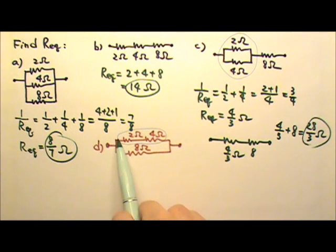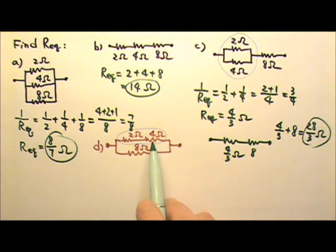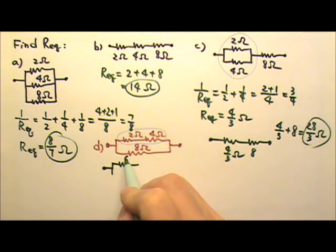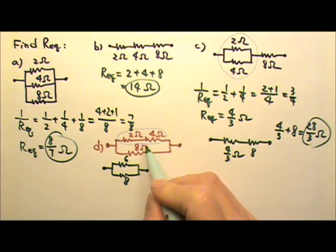So we take care of this one first. 2 and 4 in series means it's 2 plus 4, 6 ohms. So the equivalent to this one is 6 and 8. They are in parallel.